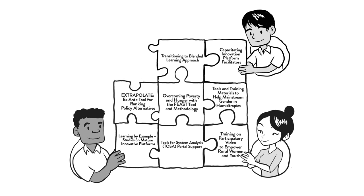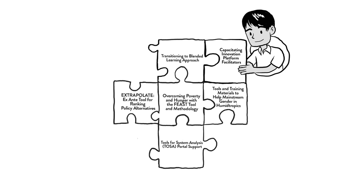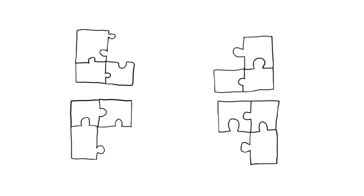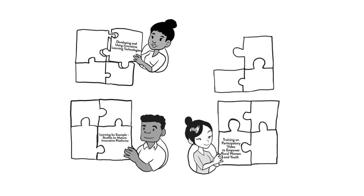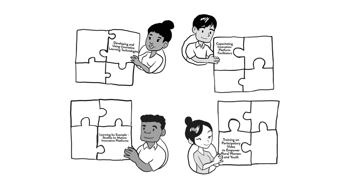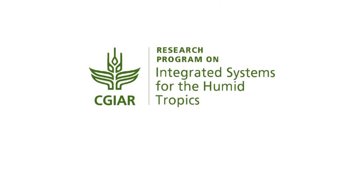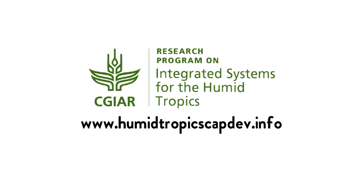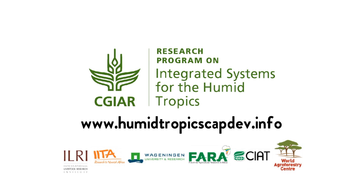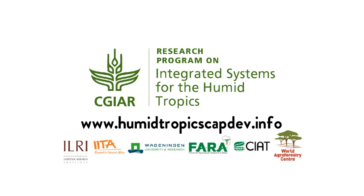And the best part? Most, if not all, of the projects were set up in a way that they can go beyond Humid Tropics. Whatever the need, whatever the context, the tools, activities, and materials the Capacity Development Team has worked so hard on for the past three years can be customized and adapted to fit every situation. Get inspired by learning more about the Humid Tropics Capacity Development Legacy Projects on www.humidtropicscapdev.info.